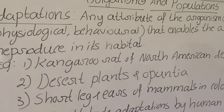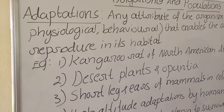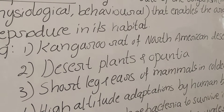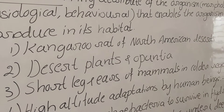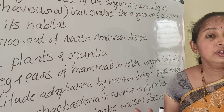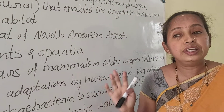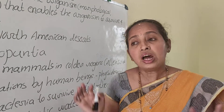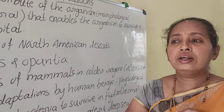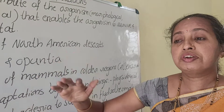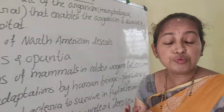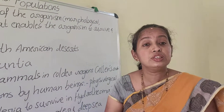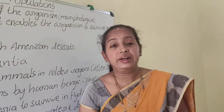For example, the kangaroo rat, which is surviving in the North American desert, literally does not consume any water in its entire lifetime. But since 70 to 90% of our body is composed of water and all metabolic reactions require water, how does it derive its water? That is from the metabolism of fat.